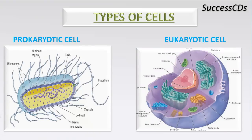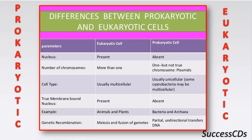The differences between these two cell types are based on certain parameters. The first parameter is nucleus: it is present in eukaryotic cells but absent in prokaryotic cells. Next is number of chromosomes: eukaryotic cells have more than one chromosome, but prokaryotic cells have only one, which is not a true chromosome — we call them plasmids. The next parameter is cell type: eukaryotic cells are usually multicellular and prokaryotic cells are usually unicellular, though some cyanobacteria may be multicellular. True membrane-bound nuclei are present in eukaryotic cells but absent in prokaryotic cells.